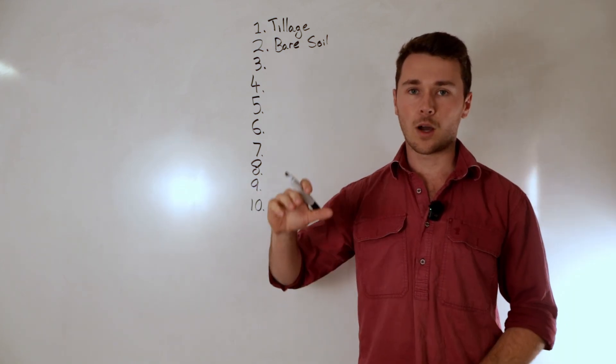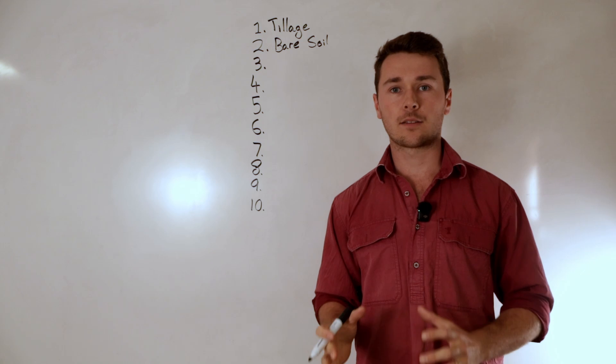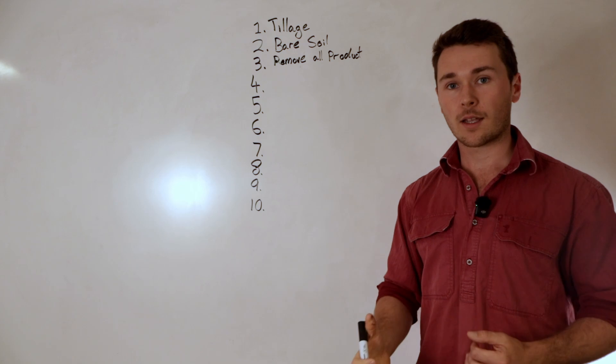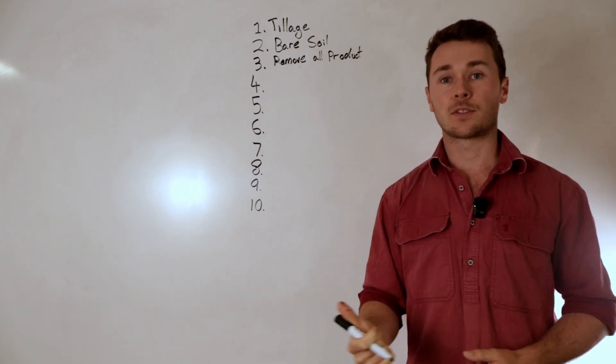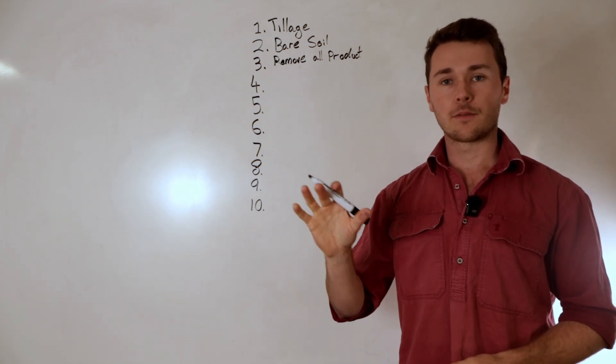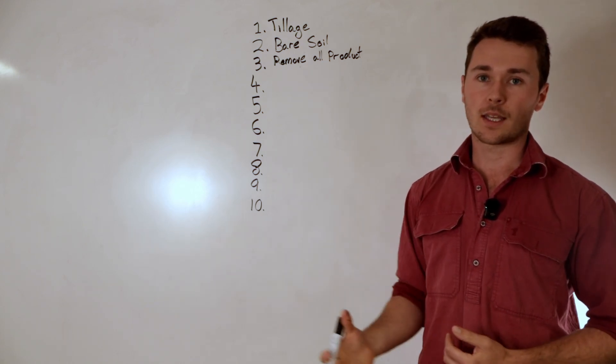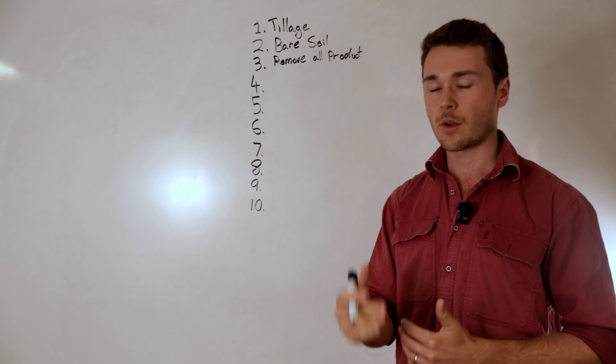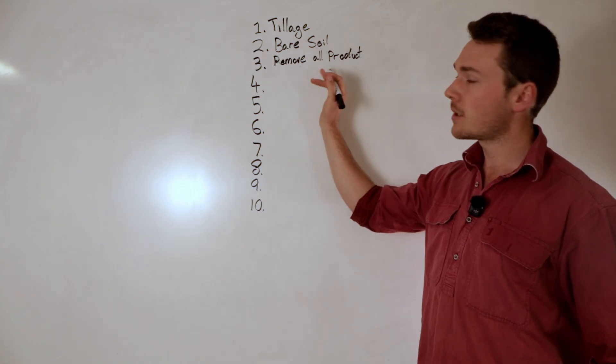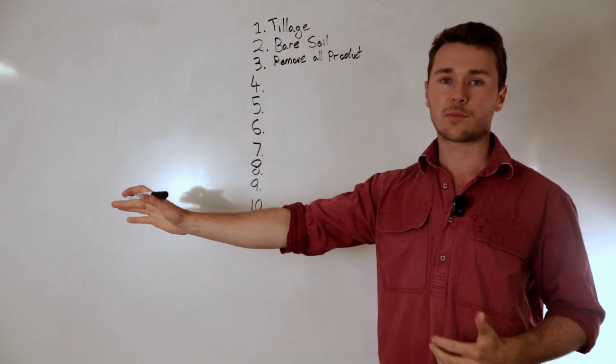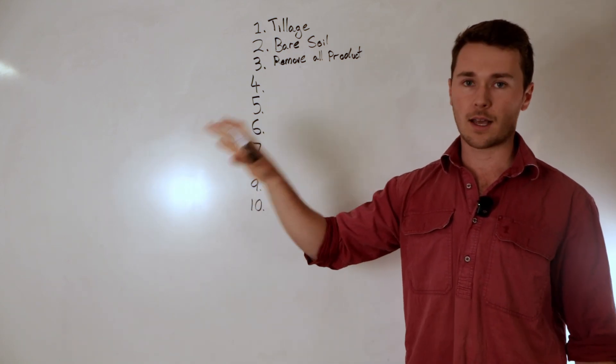The next component is that I want to remove all product from that paddock. So this is classic in hay paddocks where they have a very high removal rate. Typically in these paddocks you'll find a deficiency in potassium. More specifically it's a deficiency in available potassium. Sometimes there's a lot in the total component which is why it's important to get a total soil test to actually know what we're dealing with. But typically you find a lot of these paddocks they're just deficient in potassium because you're removing so much potassium out of the field with every bale of hay.